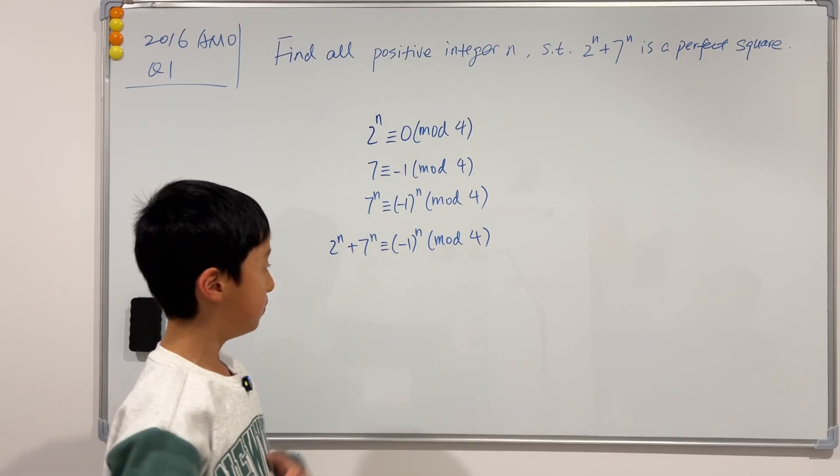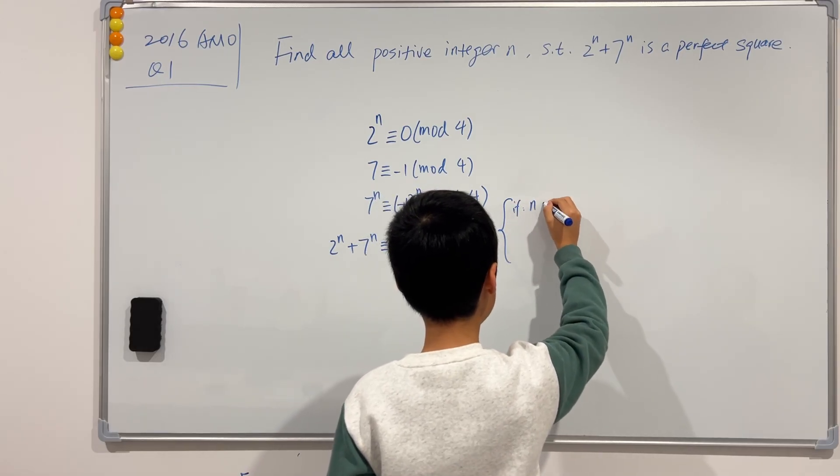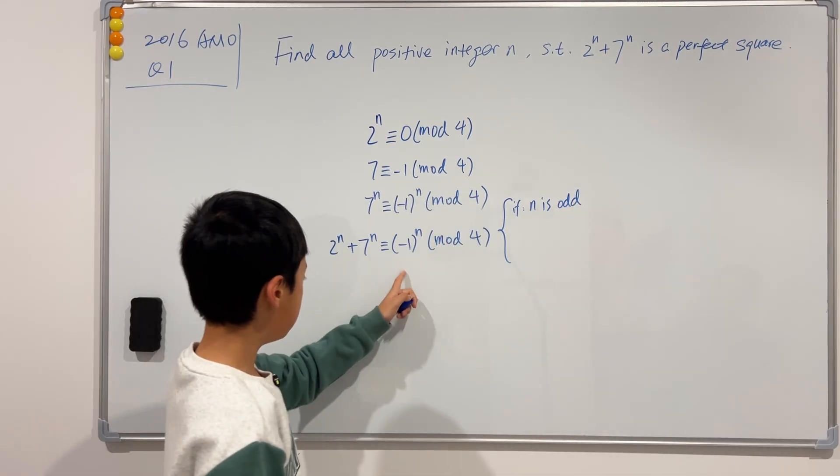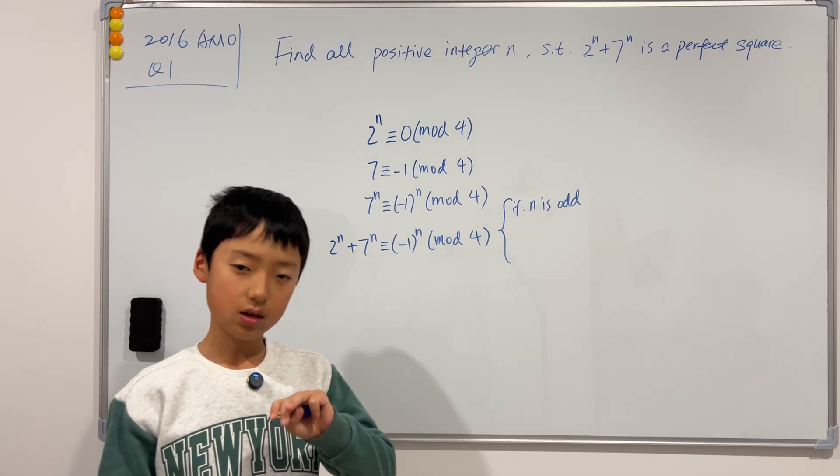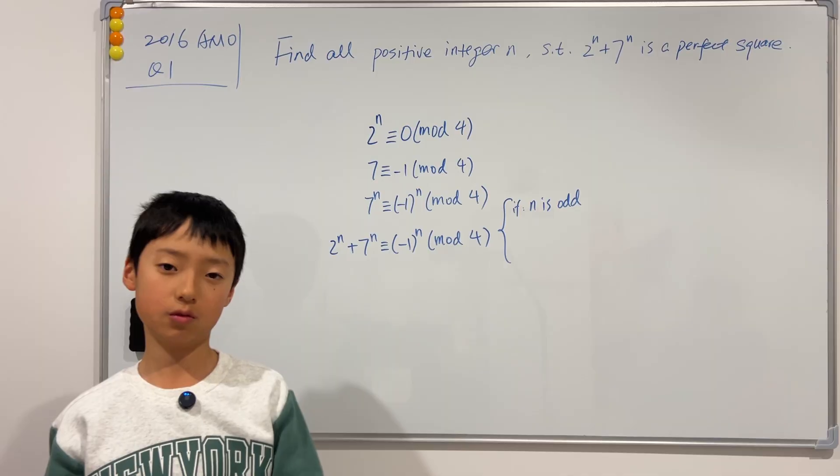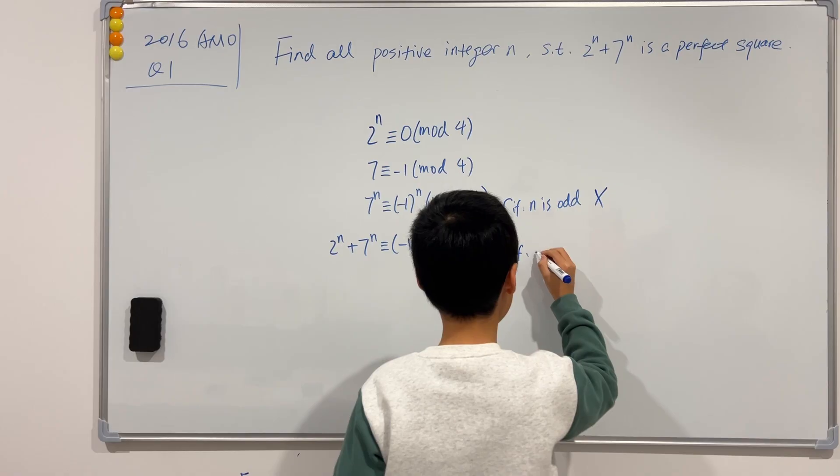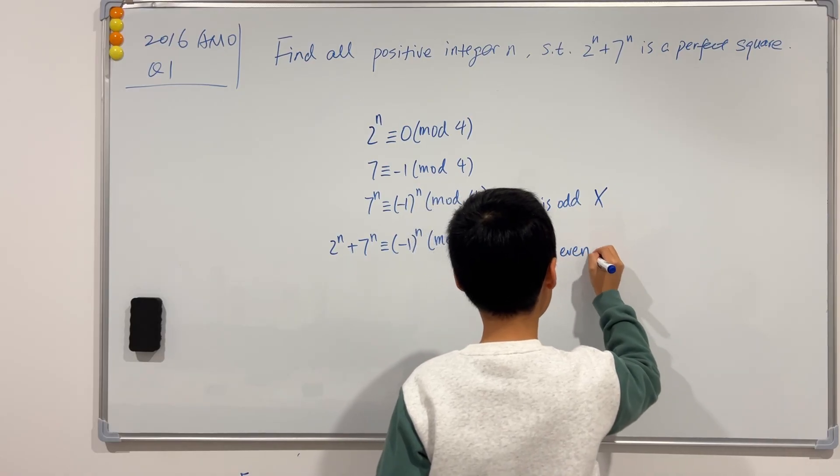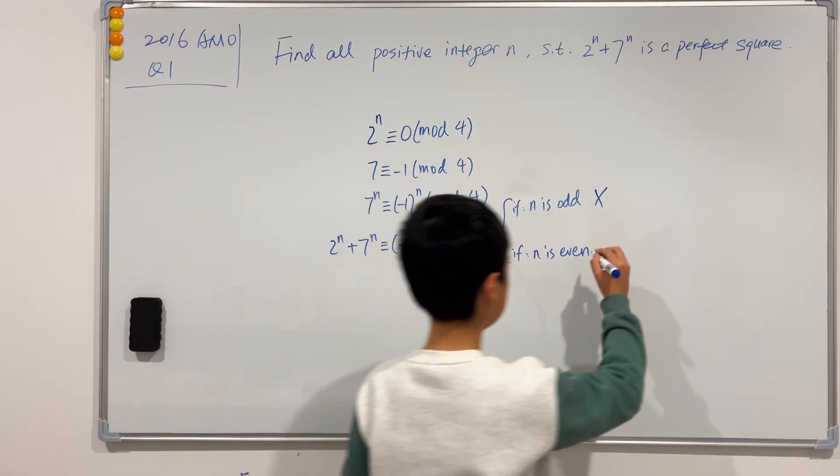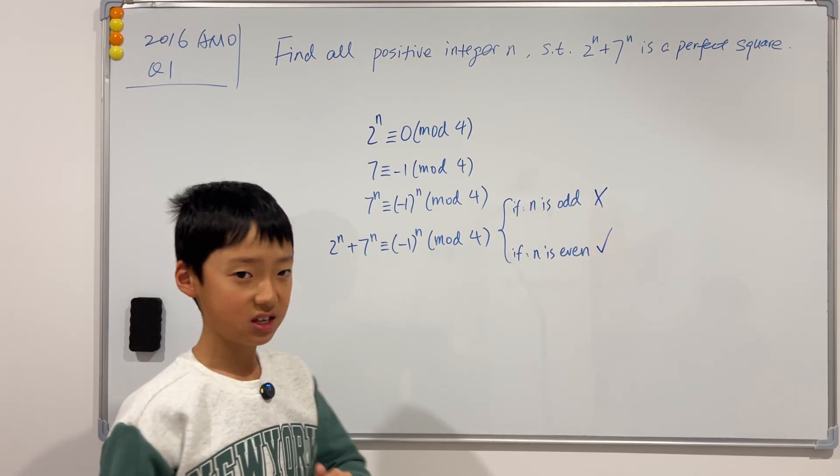And now, we can split this into cases. So if n is odd, then we see that this will be negative 1, which is equivalent to 3. But that cannot be possible, because it has to be congruent to either 0 or 1. So this is impossible. Now, if n is even, then the right-hand side will be congruent to 1. And that is possible. So now, we deducted that n has to be even.